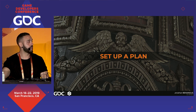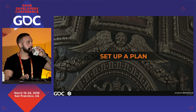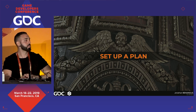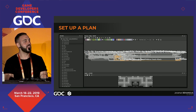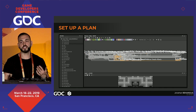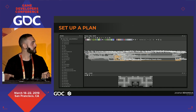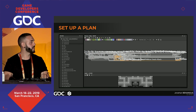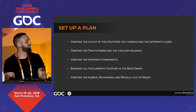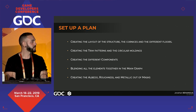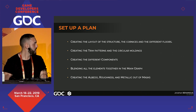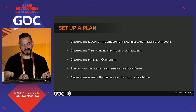I needed to set up a plan before starting. Since this project is very complex, I decided to separate all elements into separate graphs to stay organized. The height map is made out of 30 subgraphs combined together. My main steps were: creating the layout of the structure, cornices, and different floors; creating the trim patterns and circular moldings; creating the different components; blending all elements together in the main graph; and creating the albedo, roughness, and metallic out of masks.